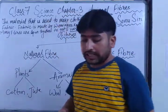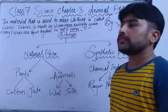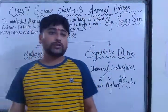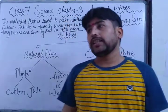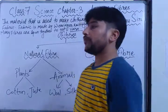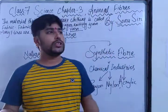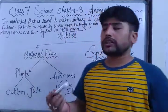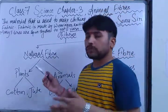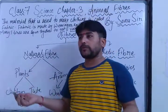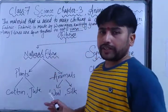Do we wear the same type of clothes in all seasons? No — we wear cotton clothes in summer, sweaters and jackets in winter, and raincoats in the rainy season. We wear different types of clothes in different seasons because they protect our body from the surrounding atmospheric conditions — raincoats prevent rain, sweaters prevent cold, and cotton clothes keep us cool in summer.